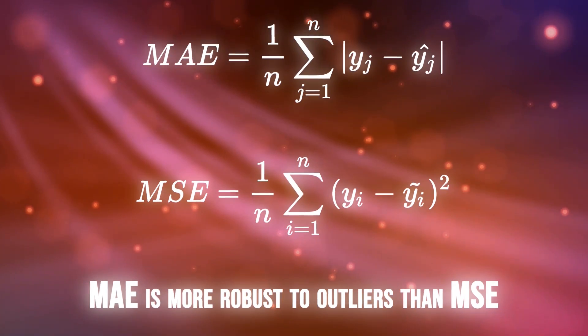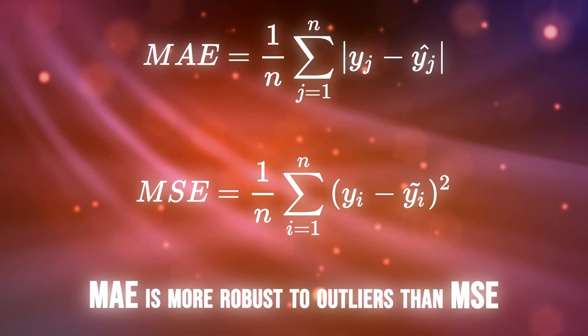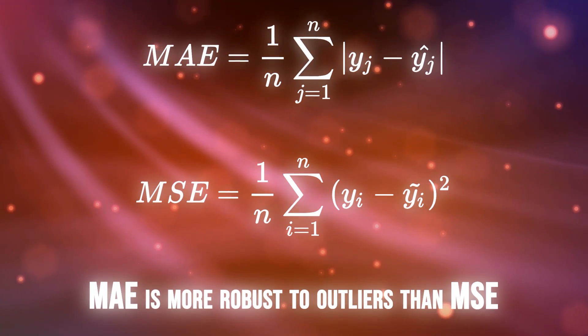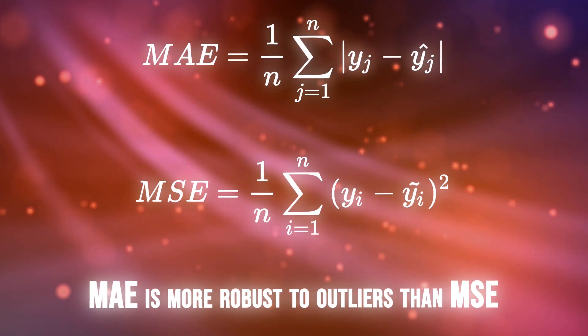MAE assigns equal weights to the data, whereas MSE emphasizes the extremes. The square of a very small number is even smaller, and the square of a really big number is huge.